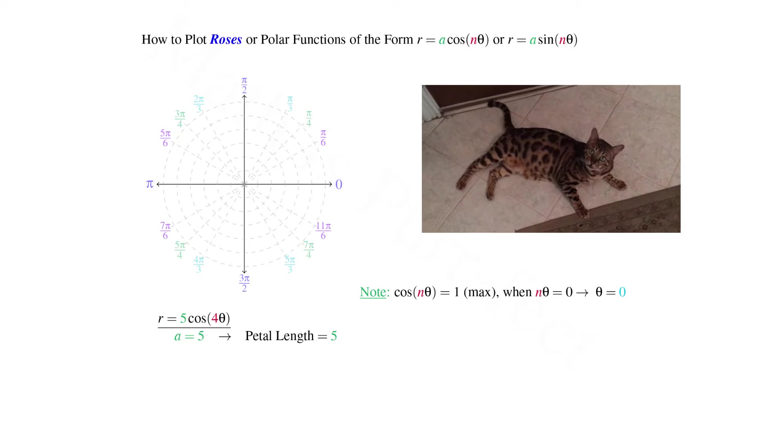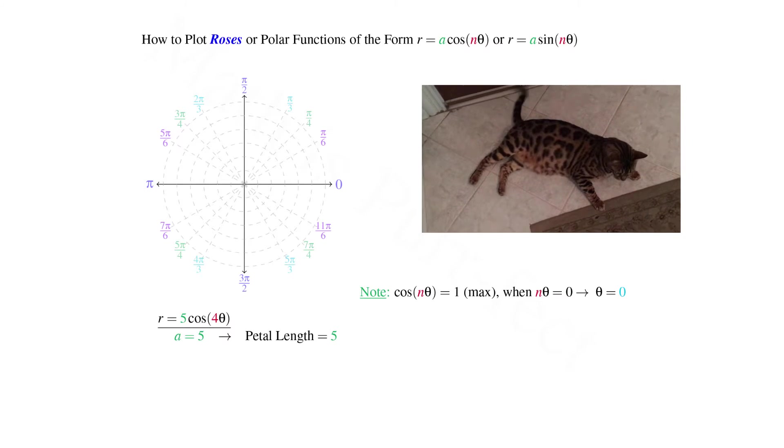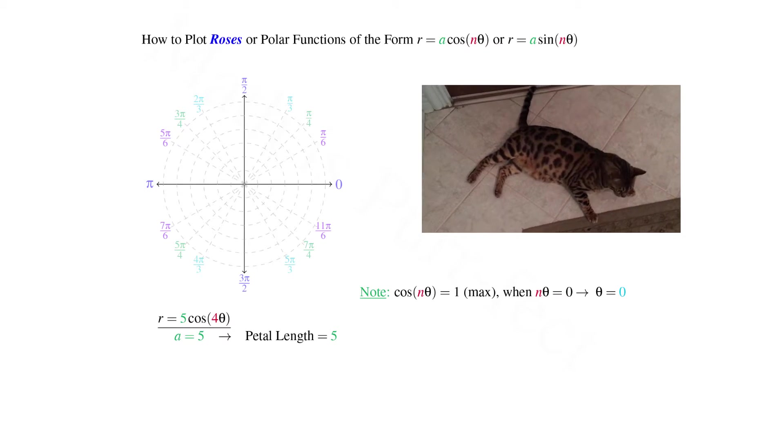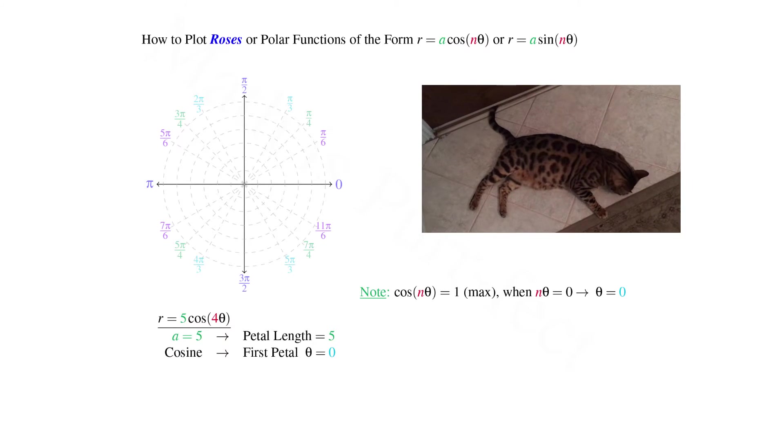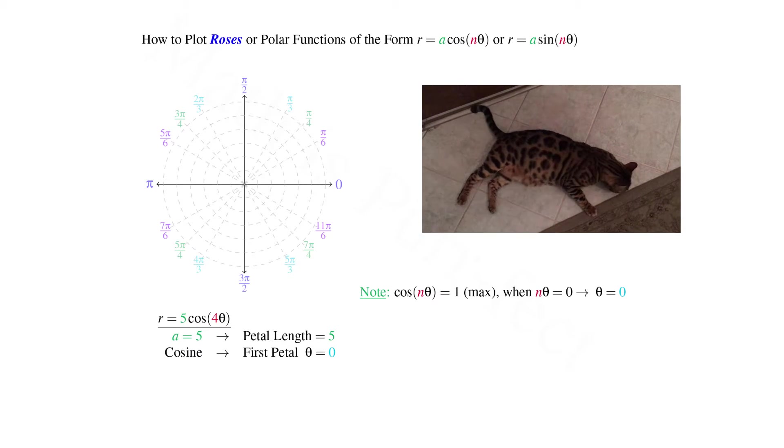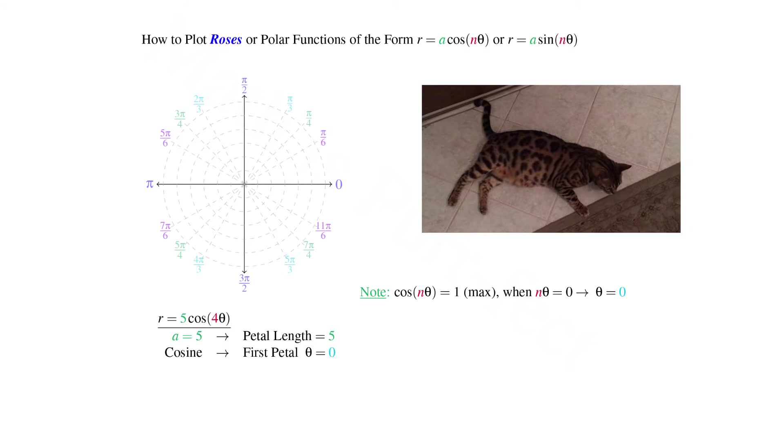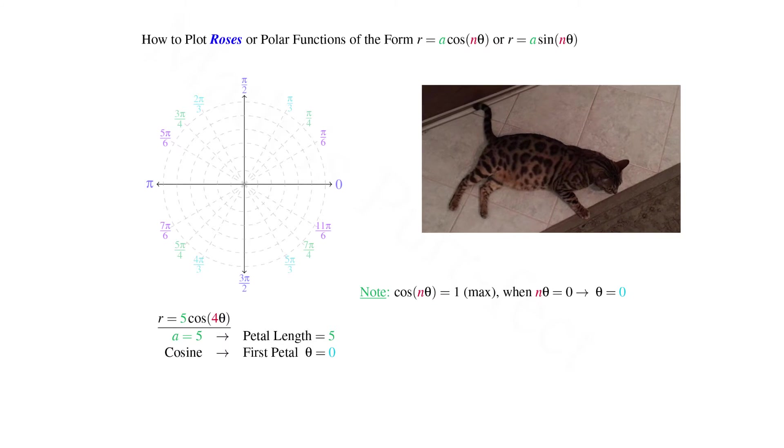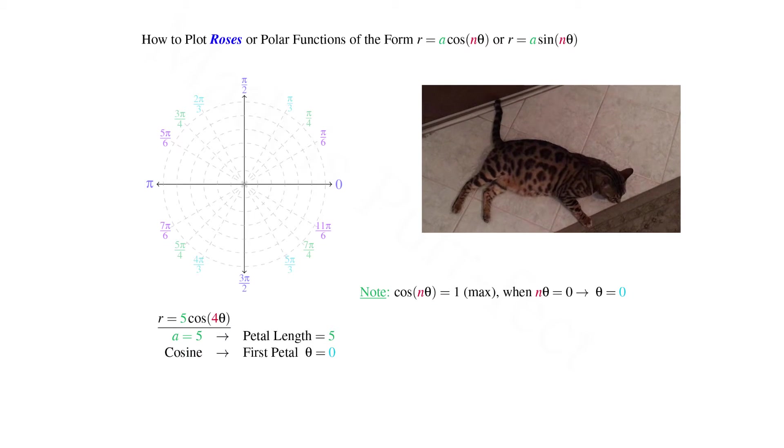Since the coefficient a is 5 in this second case, our petal length now will be 5. Given this is a cosine function, we know it will be maximized at 0, hence our first petal lies along the line θ = 0, or the positive x-axis.